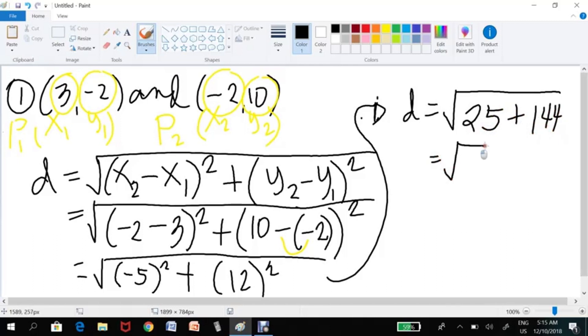And then you add 25 plus 144. That becomes 169. The square root of 169 is 13. So, the distance between these points is 13.